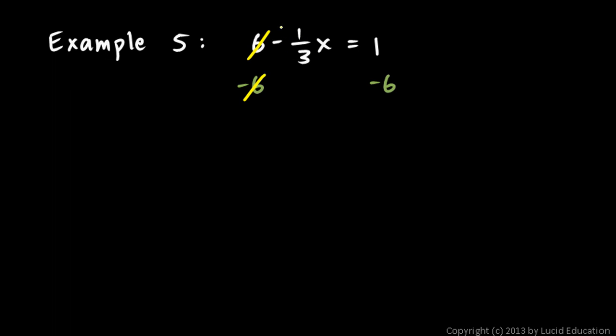I'm left with this one-third x, and this negative sign is still here too. So this is negative one-third x equals 1 minus 6 is negative 5.